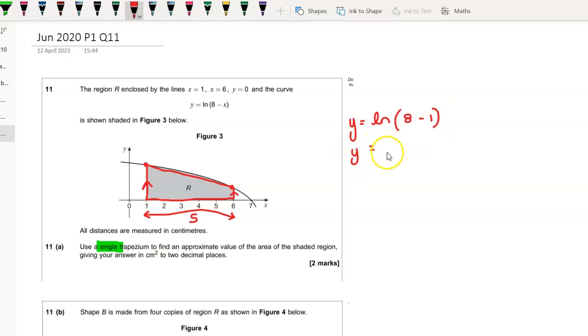So when x is one, we've got y equals the natural log of eight minus one, so that's just the natural log of seven. And do the same thing for when x equals six, and we get the natural log of two.